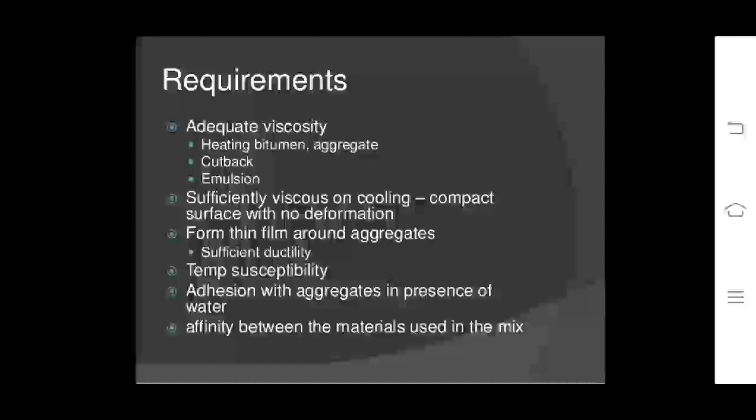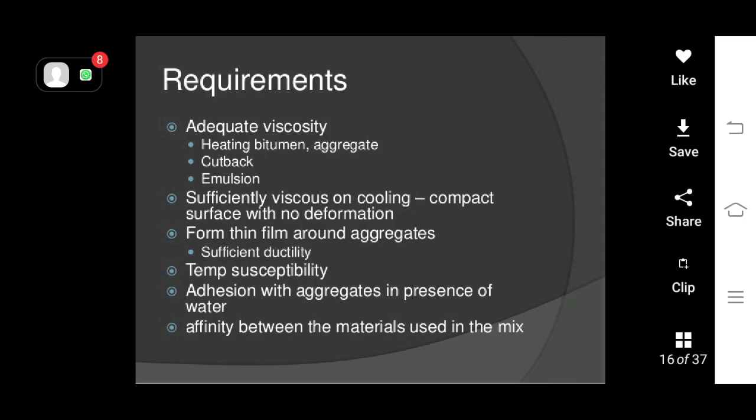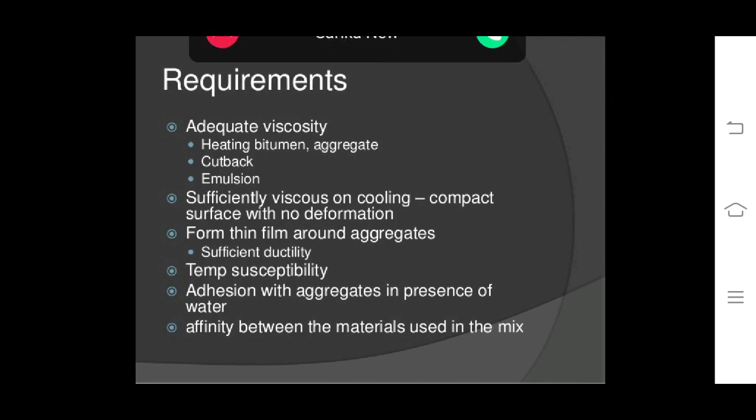Requirements for bitumen: adequate viscosity when mixing bitumen with aggregate — whether cutback or emulsion — is a basic requirement. Bitumen must be sufficiently viscous on cooling to produce a compact surface with no deformation. It should form a thin film around aggregates, have sufficient ductility, appropriate temperature susceptibility, good adhesion with aggregates in the presence of water, and adequate affinity between the materials used in the mix.